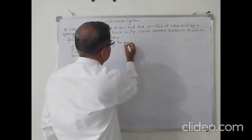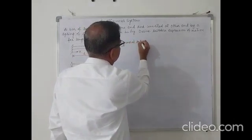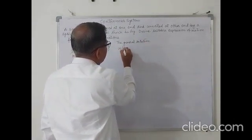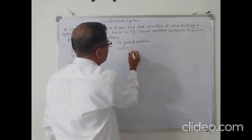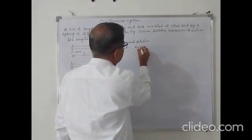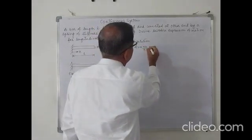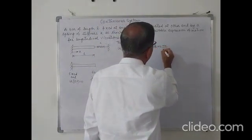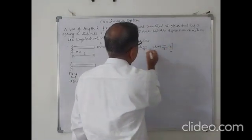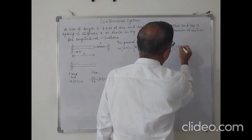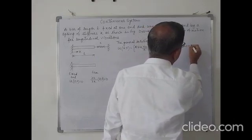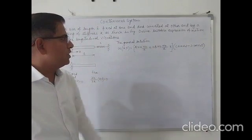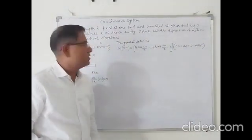The general solution is given by: u(x, t) = A sin(ωn/c · x) + B cos(ωn/c · x), multiplied by [C sin(ωn·t) + D cos(ωn·t)]. This is the general solution equation for longitudinal vibrations. Now we will apply the boundary conditions.